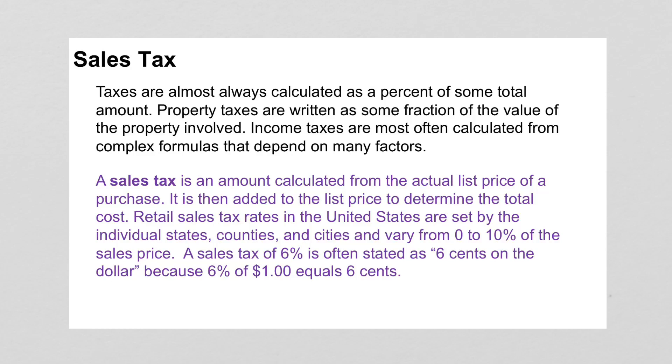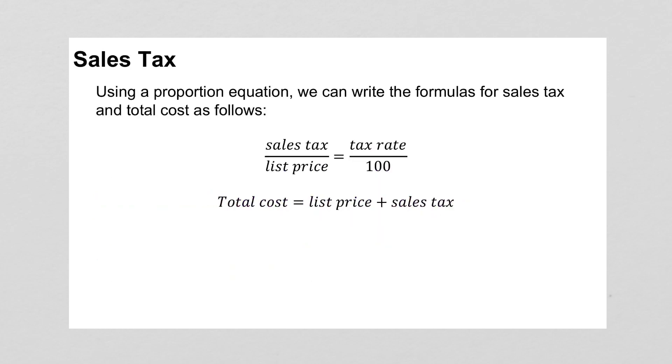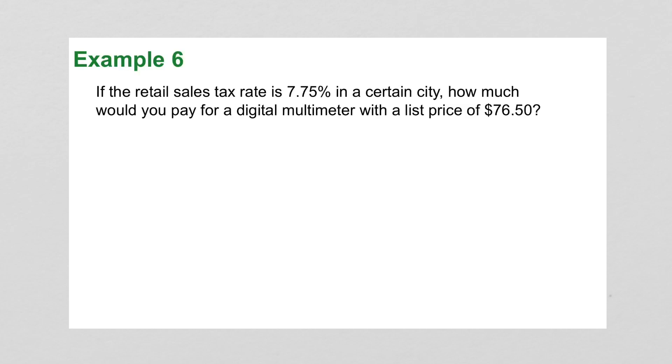Sales tax is not a discount. It's the opposite, it's adding on. You go to buy something and you have $20, and it says it's $19.99, and you're like, oh yeah, I can afford it. You get up to the cash register. No, it's really $20.53. Anyway, so yes, tax adds on. As a proportion, we would say the sales tax over the list price gives us our tax rate over 100.